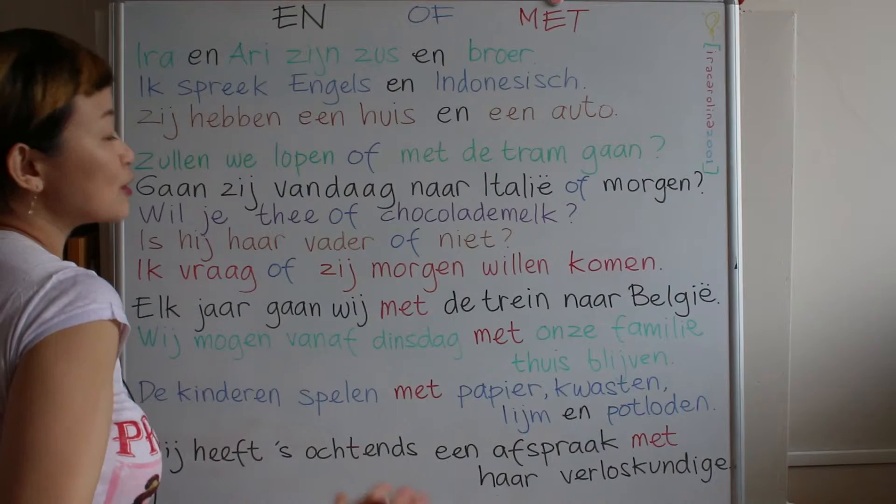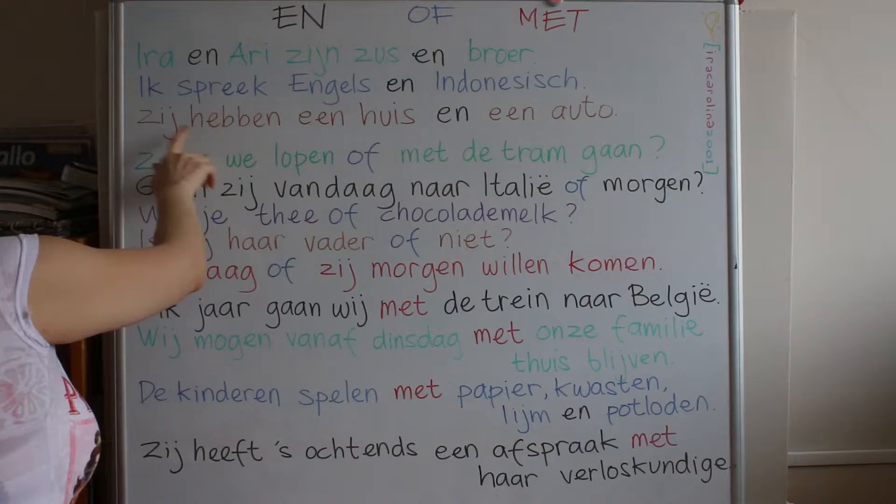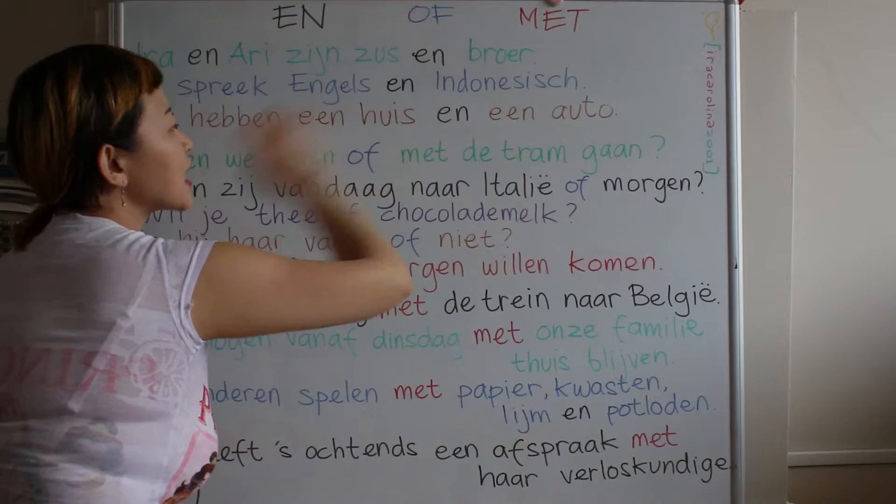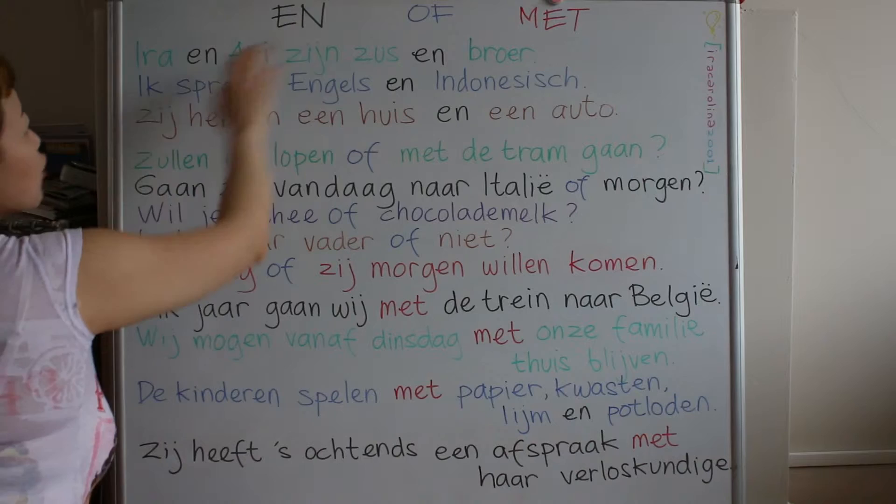'Zij hebben' means 'they have'. They have a house, a car — 'een auto' means one car. Now, 'of' — 'of' it means 'or'.